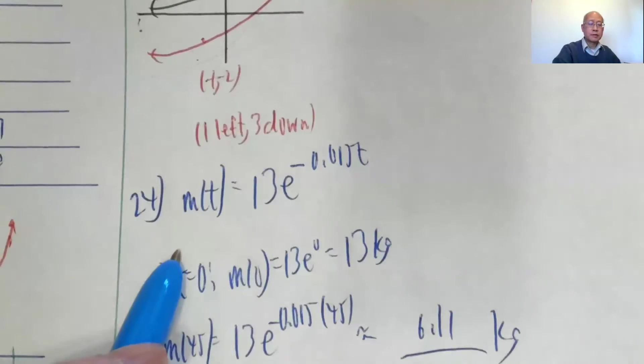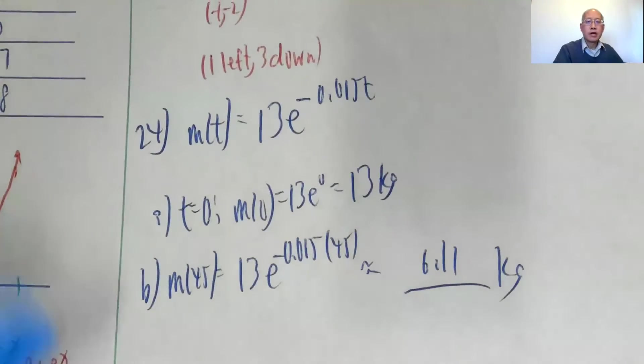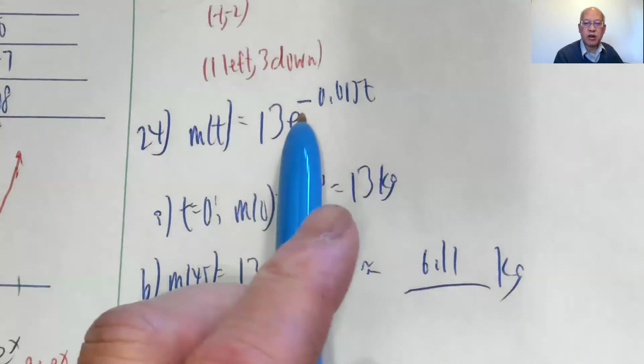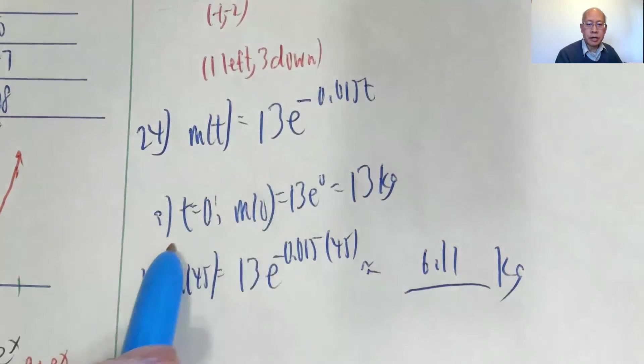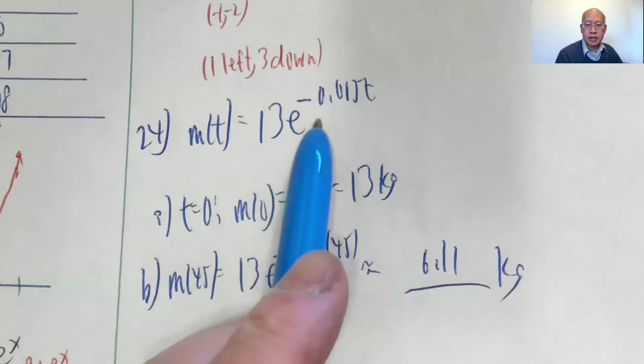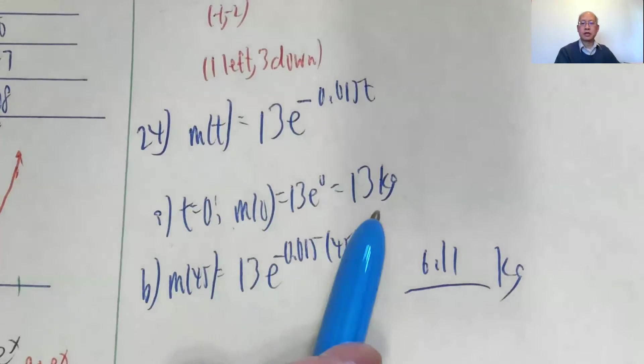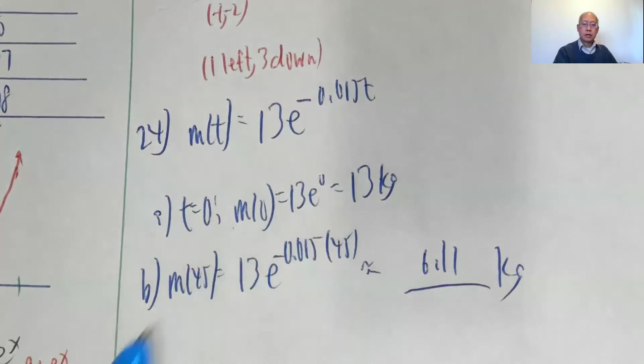We finally, 24, 24, okay, this is dealing with something called radioactive decay, m of t is 13 e to the negative 0.015t, what do you have at the start? Plug in t is 0, well, anything to the 0 is 1, so m of 0 is 13 e to the 0, or 13 kilograms.